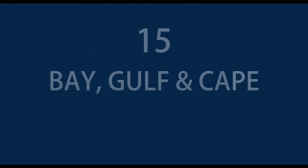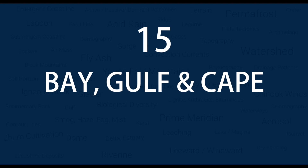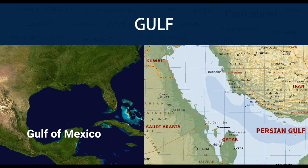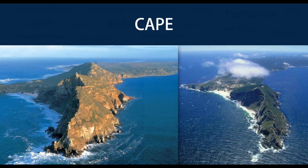Number 15 — Bay, Gulf and Cape. A bay is a recessed coastal body of water that directly connects to a larger main body of water such as an ocean, lake or another bay. A gulf is a large bay that is an arm of an ocean or a sea. A cape is a headland or a promontory of large size extending into a body of water, usually the sea.